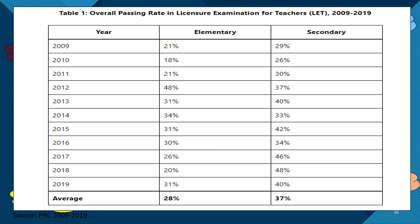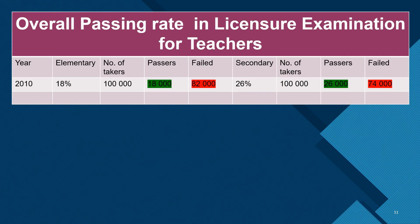This table shows the combination of passing rate per year. The licensure examination for teachers is conducted regularly twice a year or more. The highest passing rate for elementary education is 48% in 2012, and likewise in secondary education, 48% in 2018. The lowest passing rate in elementary education is 18% in 2010, and in secondary education 26% in the same year. If we analyze the data from 2010 — the lowest passing rate performance for both education areas — and assume 100,000 takers in both areas, you will notice the difference between those who passed and those who failed. Since none of the years from 2009 to 2019 reached a 50% passing rate, the licensure examination for professional teachers is never easy.